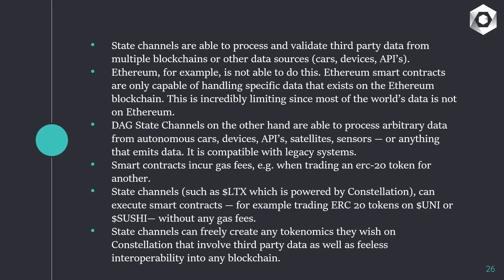State channels are also compatible with legacy systems. Smart contracts incur gas fees — for example, when swapping ERC20 tokens on Uniswap or SushiSwap, there are always gas fees to pay. State channels, on the other hand, can execute the same thing — trading ERC20 tokens — with basically no gas fees. State channels can also freely create any tokenomics they wish on Constellation that involve third-party data, as well as feeless interoperability into any blockchain.